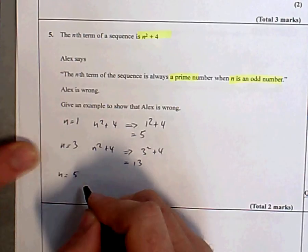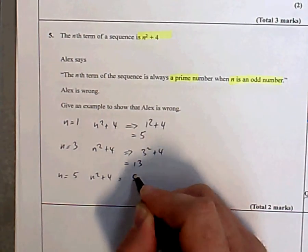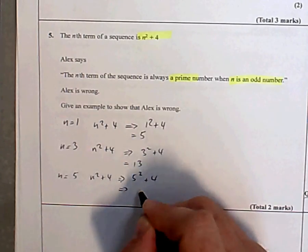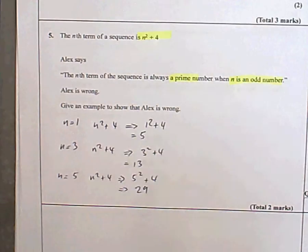n equals 5, sorry. n squared plus 4. We're going to have 5 squared plus 4. 5 squared is 25, 25 plus 4 is 29. Again, that's a prime number, so I still haven't done it.